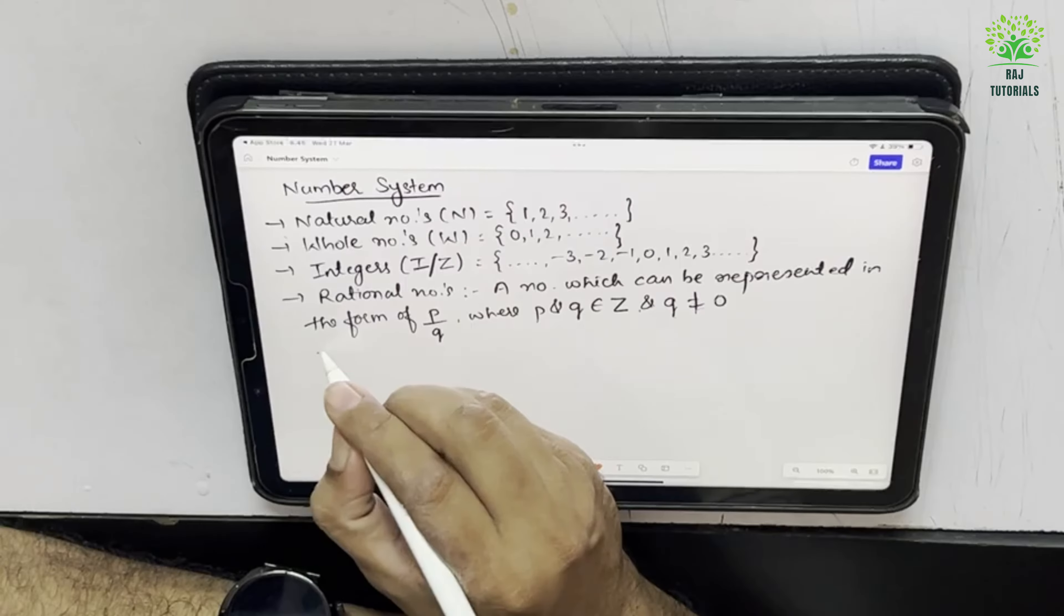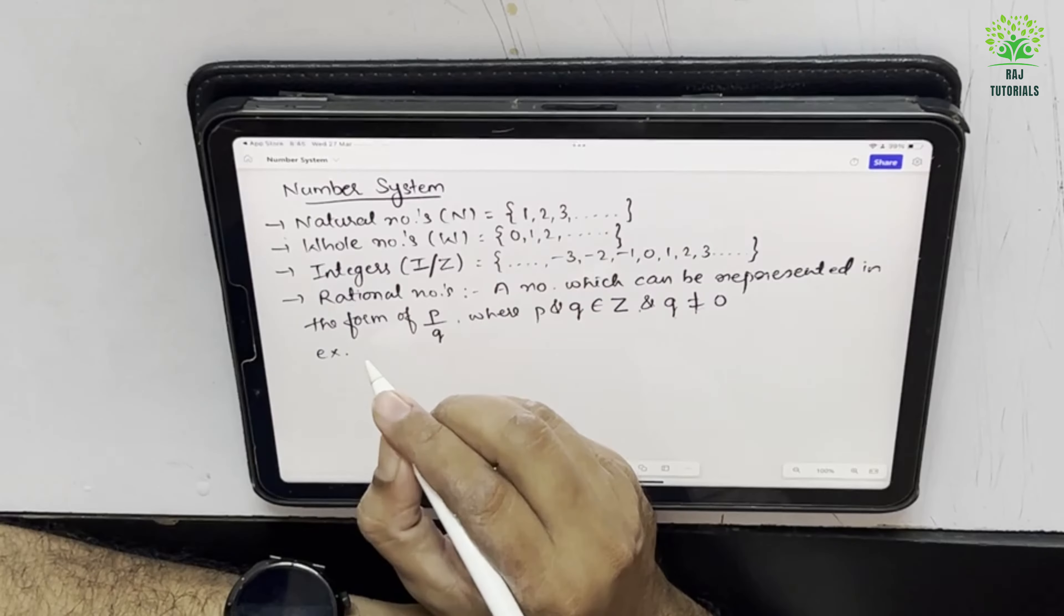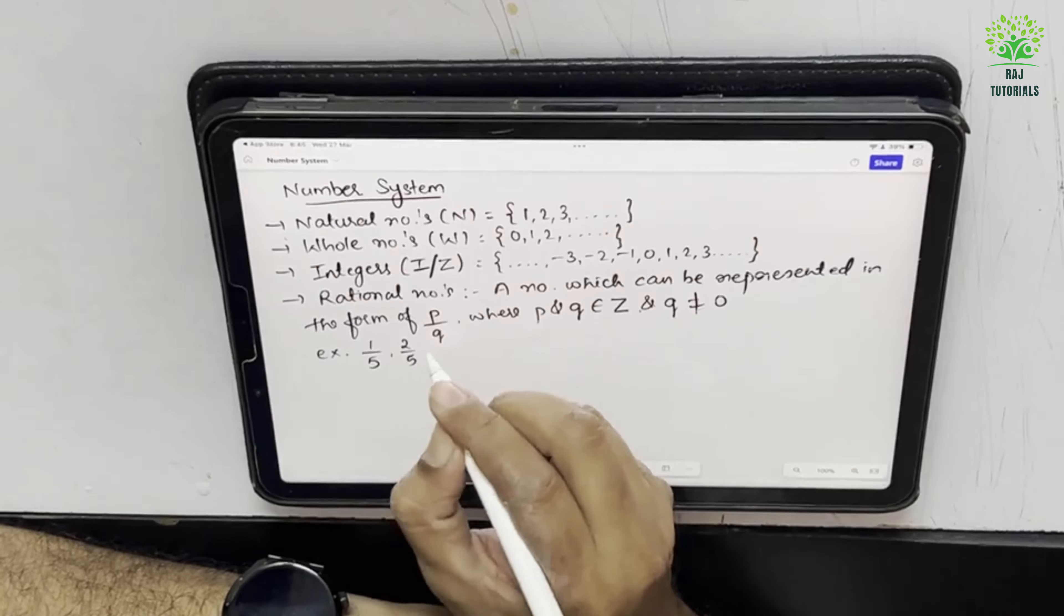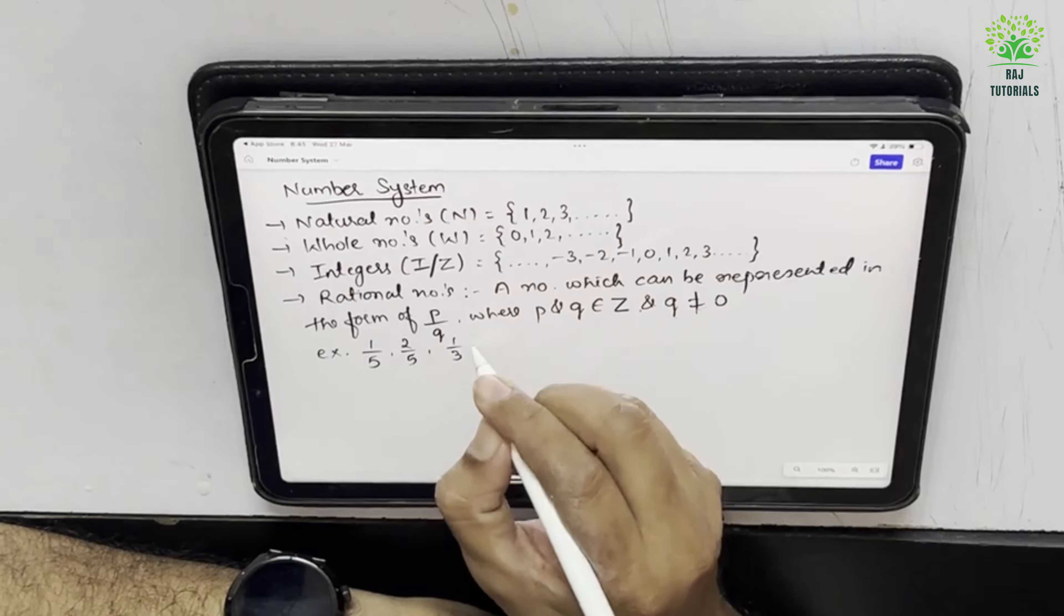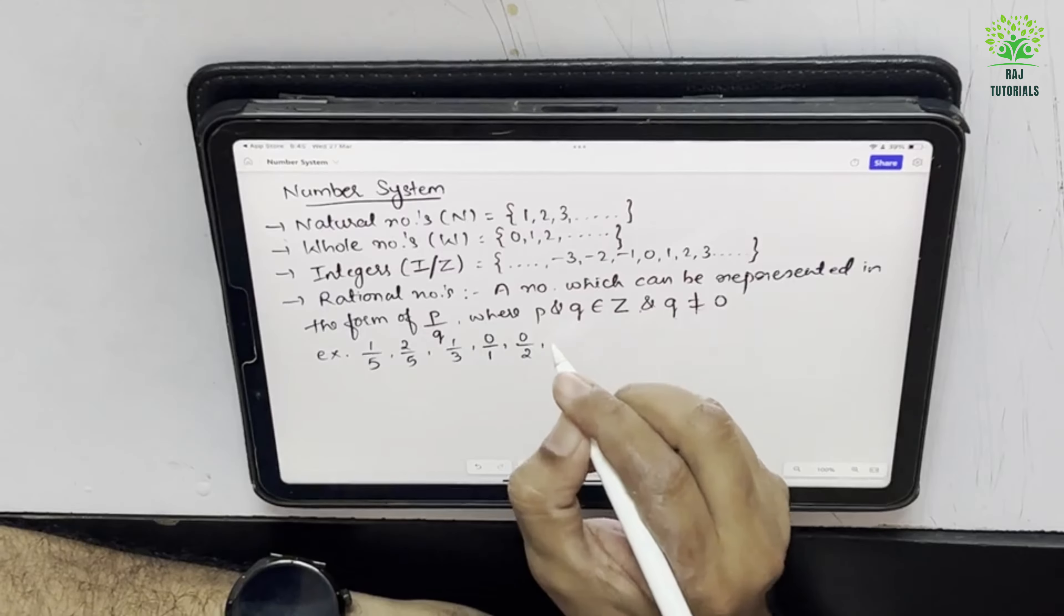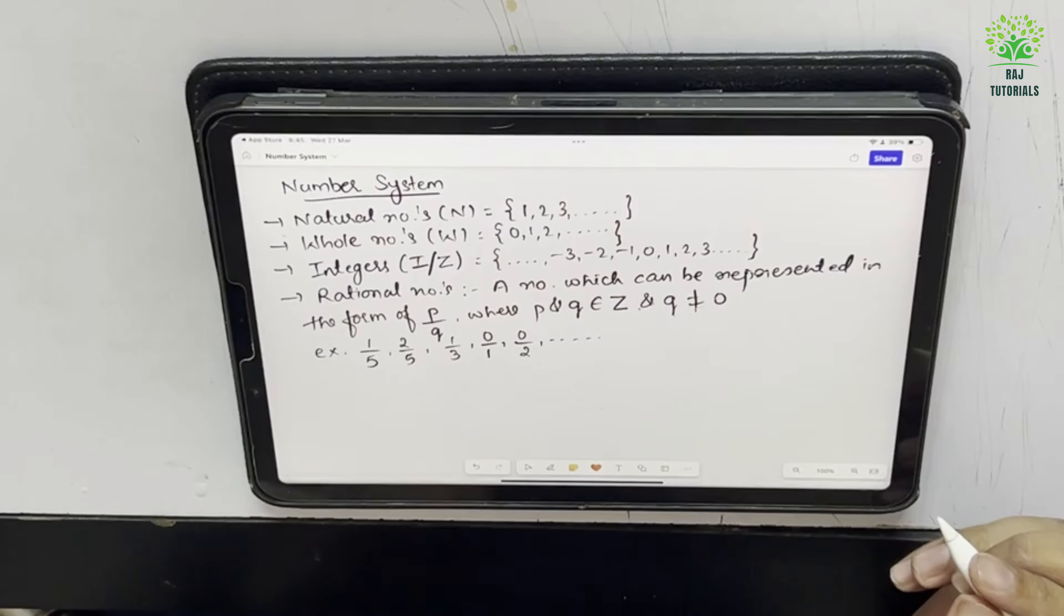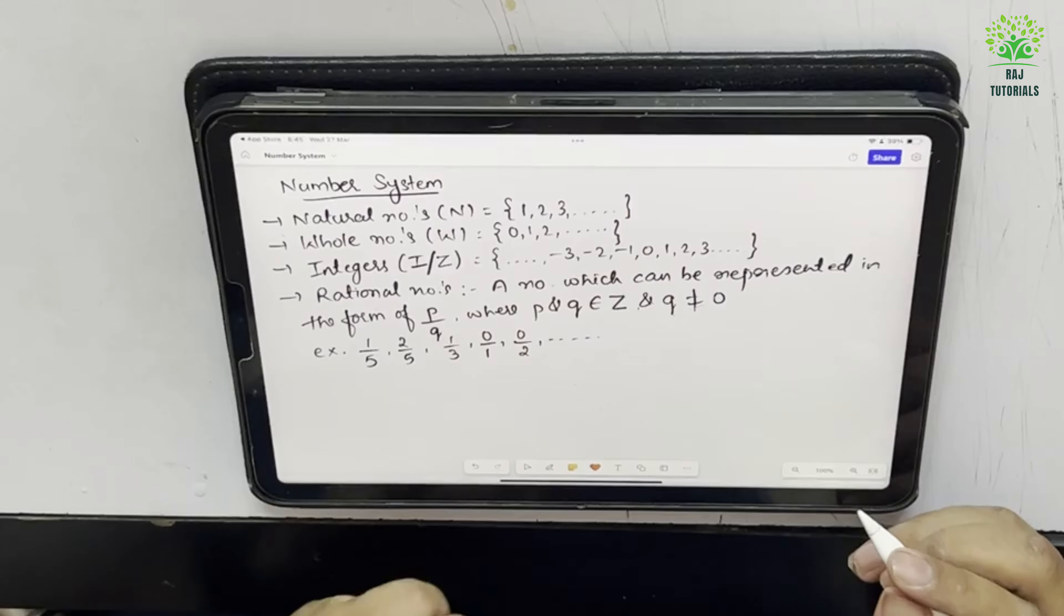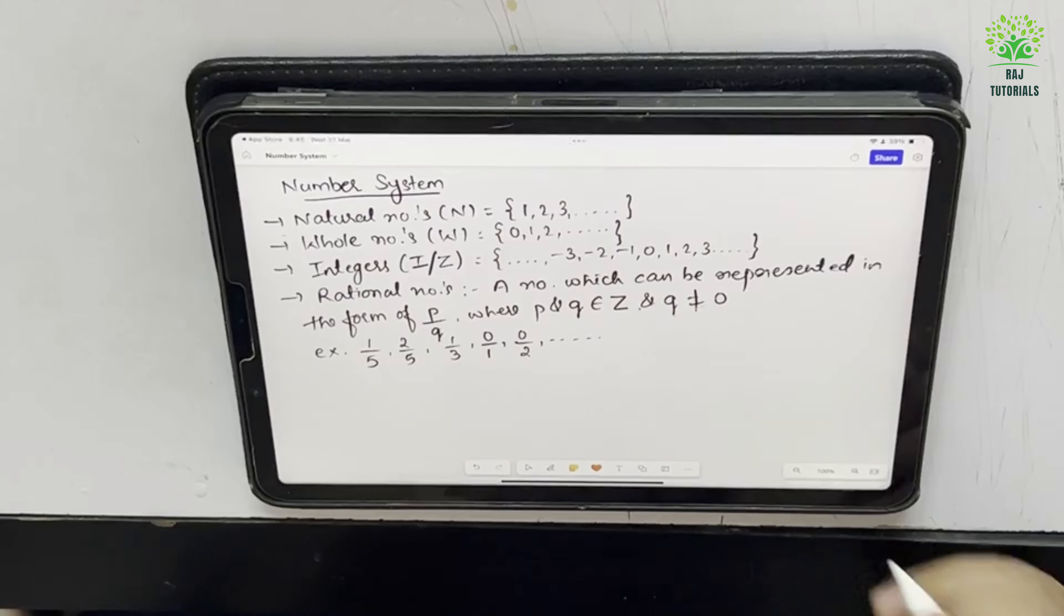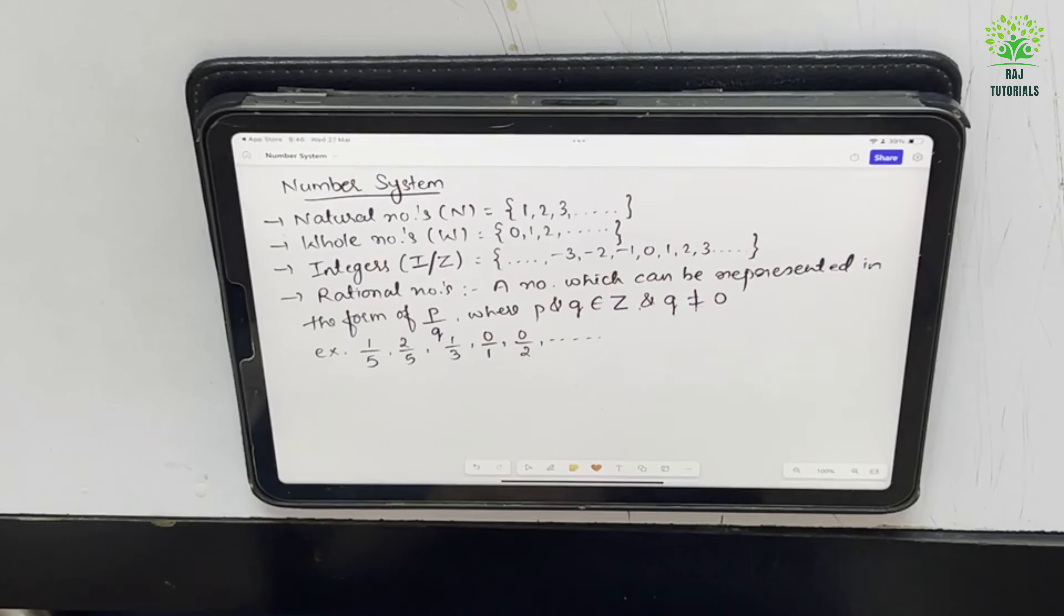So if I want to say an example, can I say 1 by 5, 2 by 5, 1 by 3, 0 by 1, 0 by 2 or any such number. It can be of any form. See, he has told me not to put 0 in the denominator but I can keep 0 in the numerator as 0 upon 1 will be any rational number.